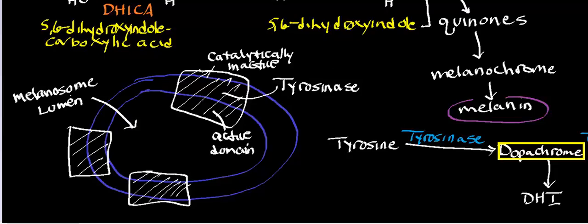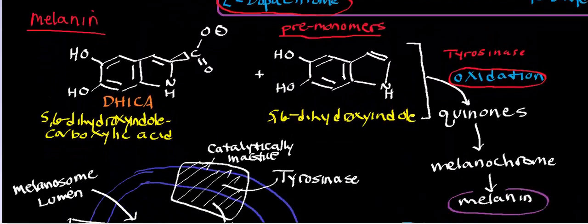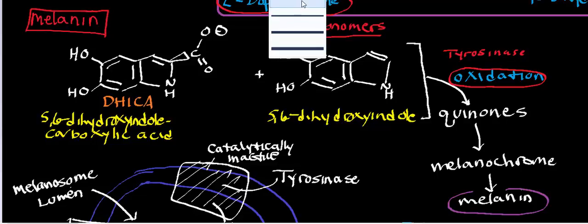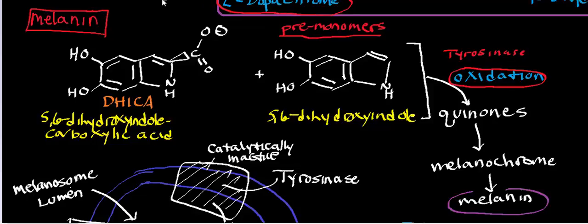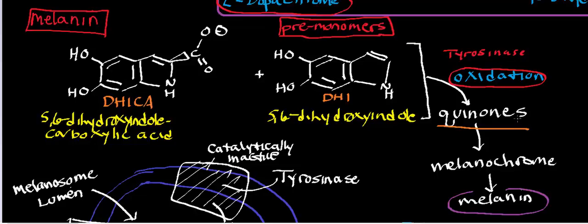In the last few videos we've been talking about enzymes that are used to make a molecule called melanin, which is extremely important for protection of DNA. In melanin synthesis, we have two molecules called premonomers — they're called premonomers because they're not the direct monomers of melanin. They have to undergo an oxidation reaction with tyrosinase to become the actual active monomers. These premonomers are dihydroxyindole carboxylic acid (DHICA) and dihydroxyindole (DHI), and they serve as premonomers for the synthesis of their respective quinones, which will be polymerized into melanin.